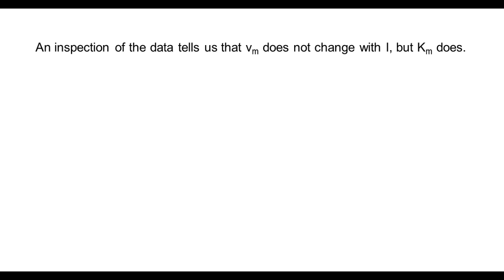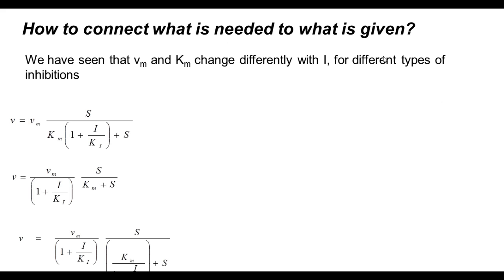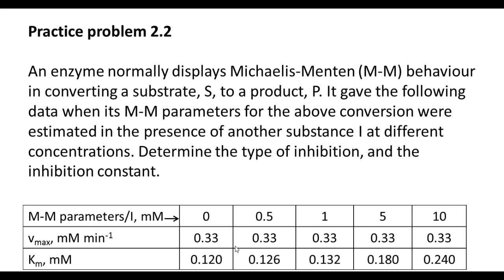When we look at the data, if we inspect the data, it tells us that Vmax does not change with I, but Km changes. Let me show this to you here. The data was this. As the inhibitor concentration changed, 0.5, 1, 5, and 10, the Vmax remains the same at 0.33. Whereas Km changed. This is what we saw, what we said earlier, and this is what the data shows us.